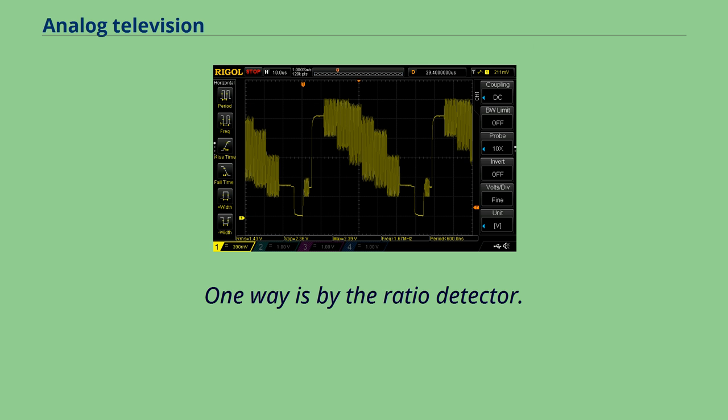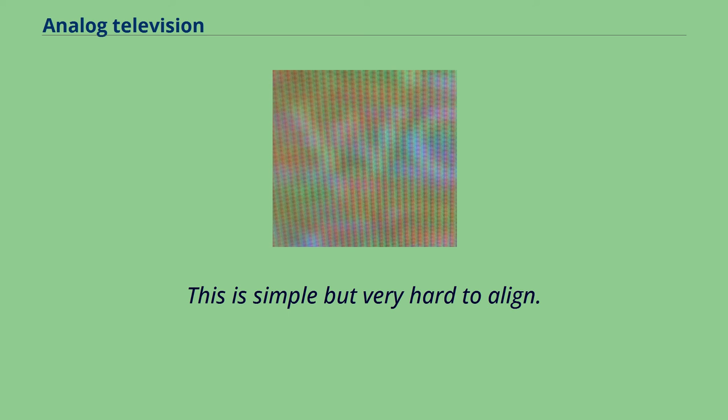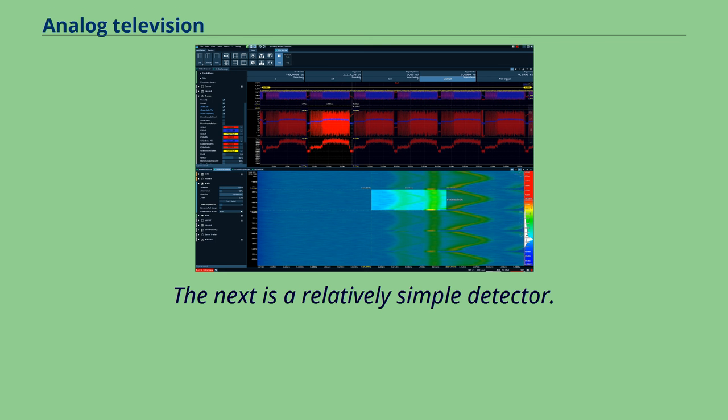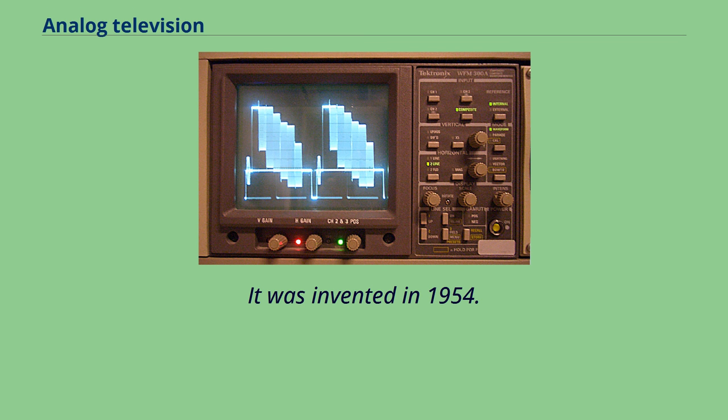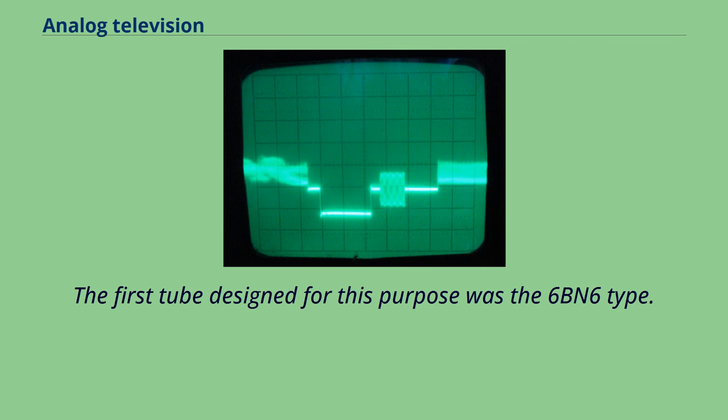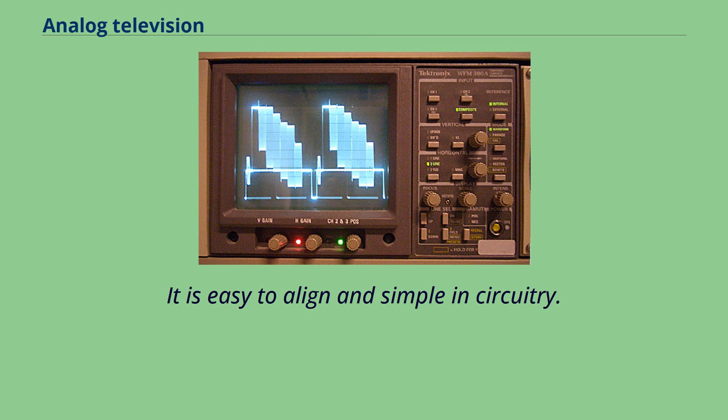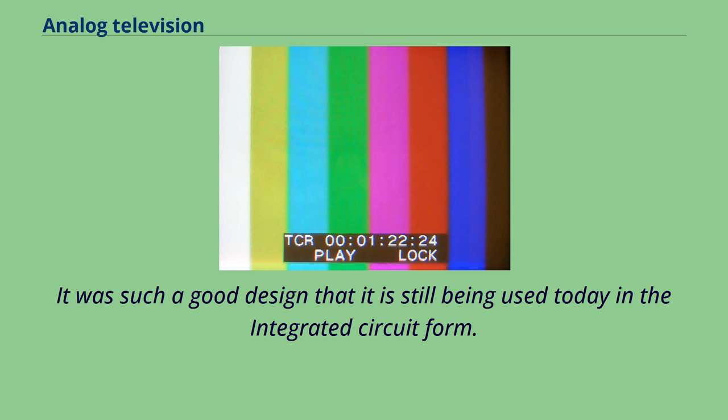The next part is the sync separator/clipper. This also does more than what is in its name. It also forms the AGC voltage. This sync separator turns the video into a signal that the horizontal and vertical oscillators can use to keep in sync with the video. The horizontal and vertical oscillators form the raster on the CRT. They are kept in sync by the sync separator.